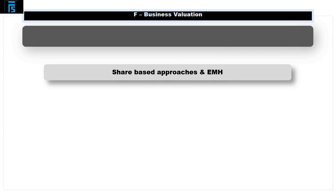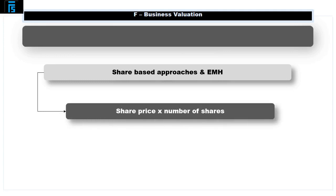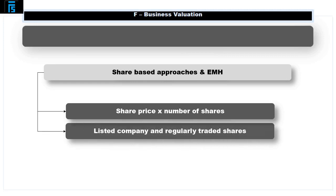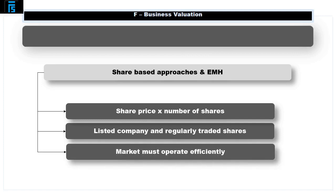Share-based approaches and the EMH. Many companies already have value in that they have a share price. The company value can then be derived by multiplying the share price by the number of shares in issue. In order for this to be a valid approach, however, the company must be listed, i.e. it must have a share price. The shares must be regularly traded, i.e. the share price must be current. And the market must operate efficiently, i.e. the share price must be adjusted quickly and accurately in the light of new information.